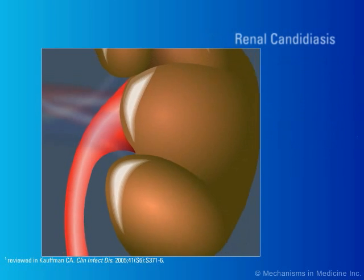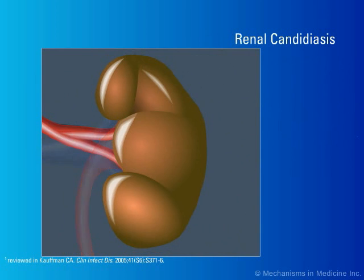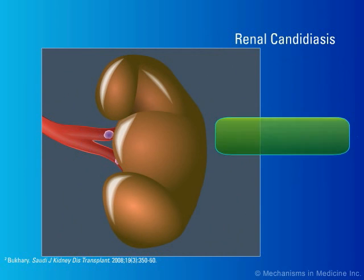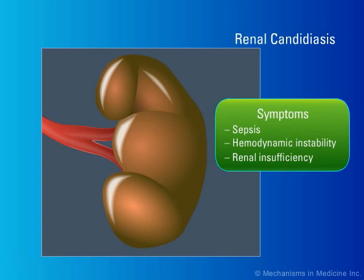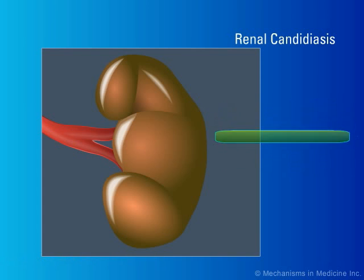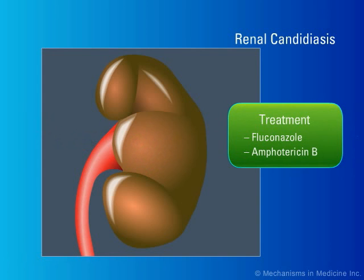Renal candidiasis may result from candidemia or disseminated candidiasis. This infection often presents with sepsis, hemodynamic instability, and renal insufficiency. Renal candidiasis can be treated with fluconazole or amphotericin B.